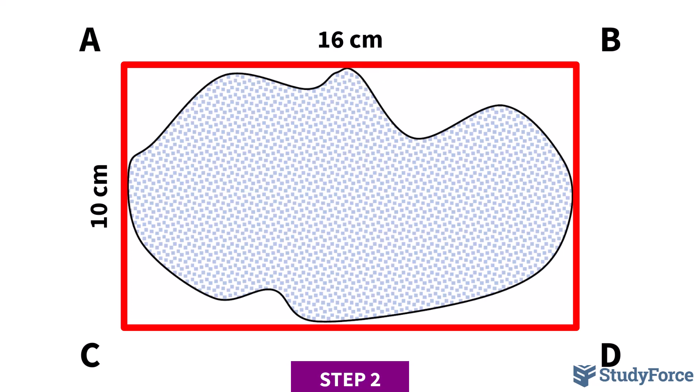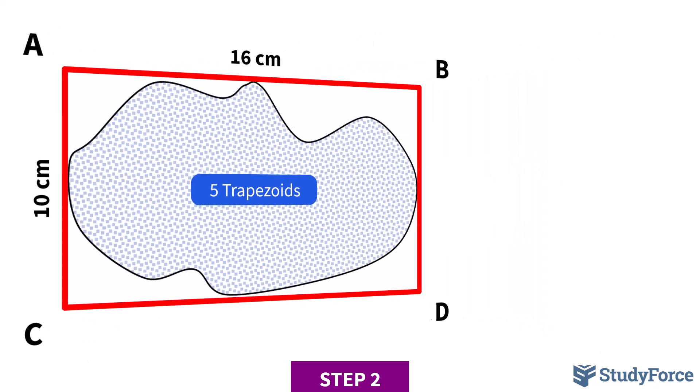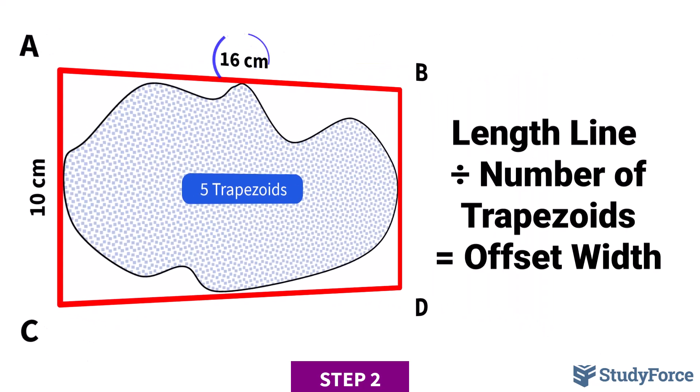Step number two. Just as we did with the original offset method, step two involves selecting the desired number of trapezoids to approximate the space. For simplicity, we will split the area into five equal spaced sections. In other words, five trapezoids. Whatever you end up choosing, divide the length line, which we found earlier, by this chosen quantity.